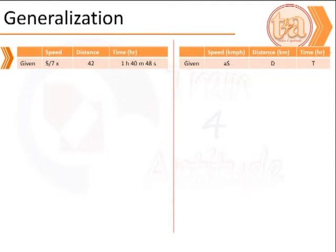To generalize, we assume that the speed in consideration is a fraction, A, of the initial speed, S. The distance is D and the time taken to travel this distance is T.